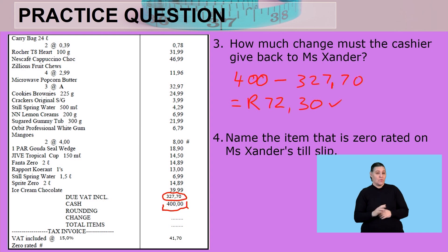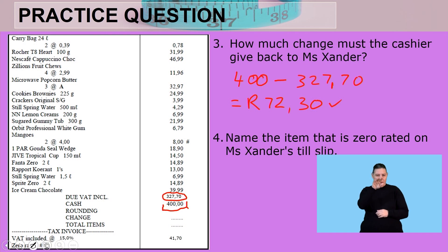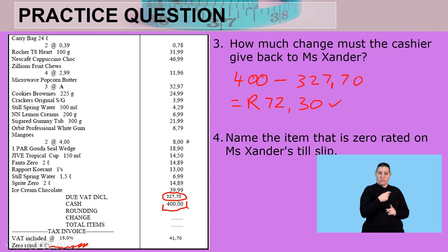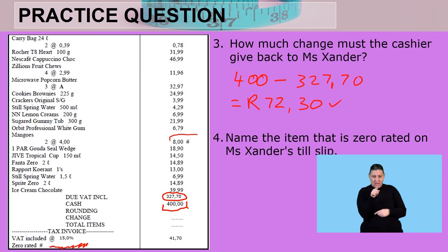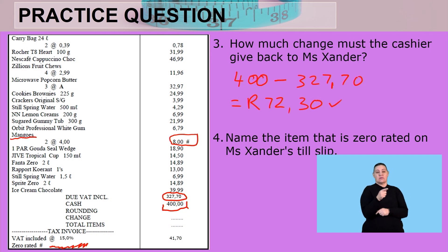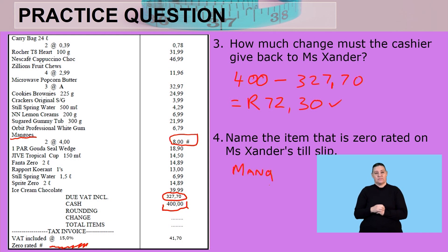Name the item that is zero rated on Ms. Sander's till slip. Looking at the till slip right at the bottom, we actually have zero rated with the hashtag symbol. So I'm looking at my till slip and I see the hashtag symbol. Which item are we dealing with? Mangoes. So let's write that word down.